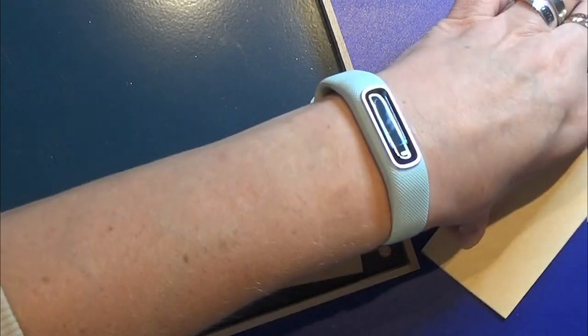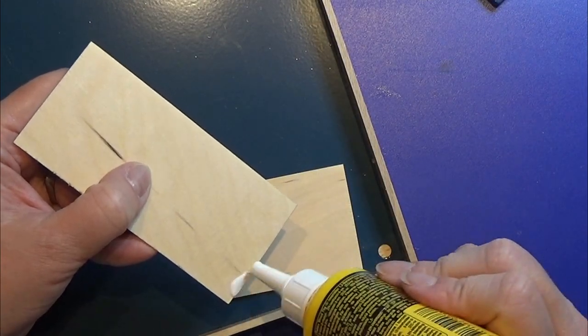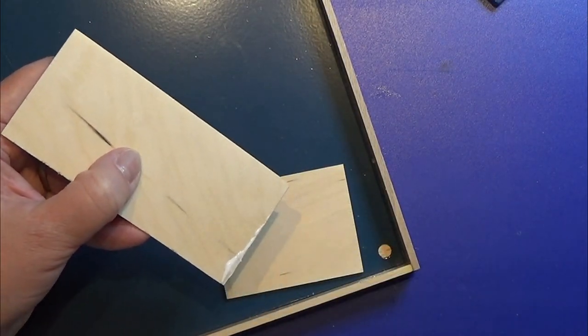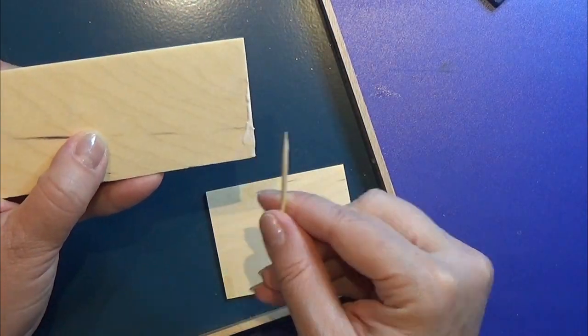Then I glue the table top and the third leg together. Again I used my glue jig to hold it together.